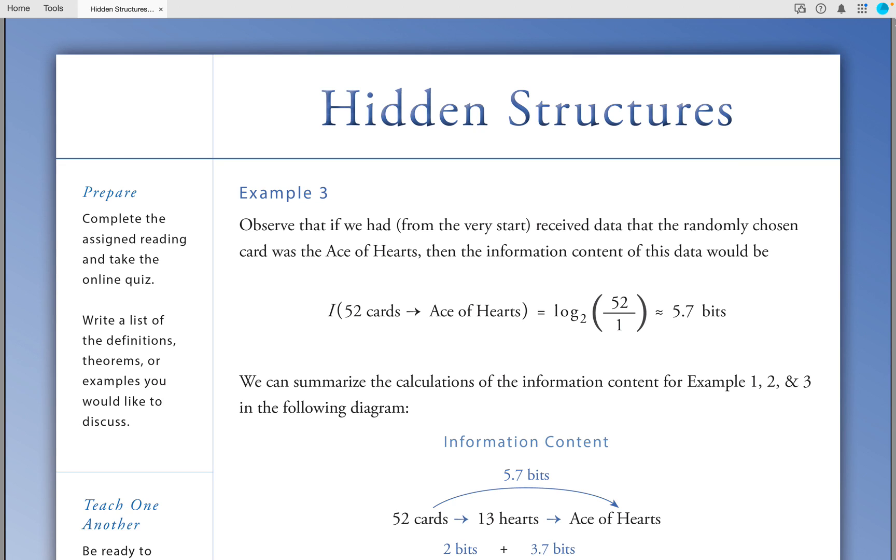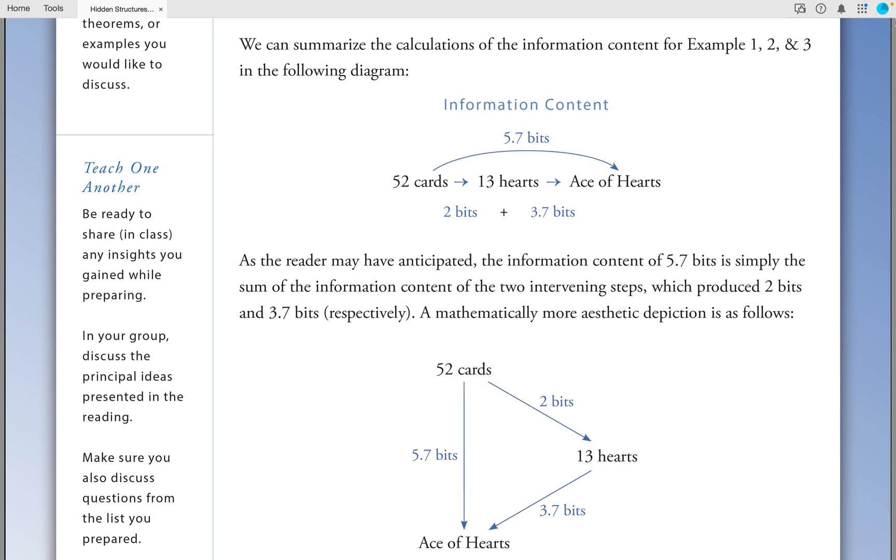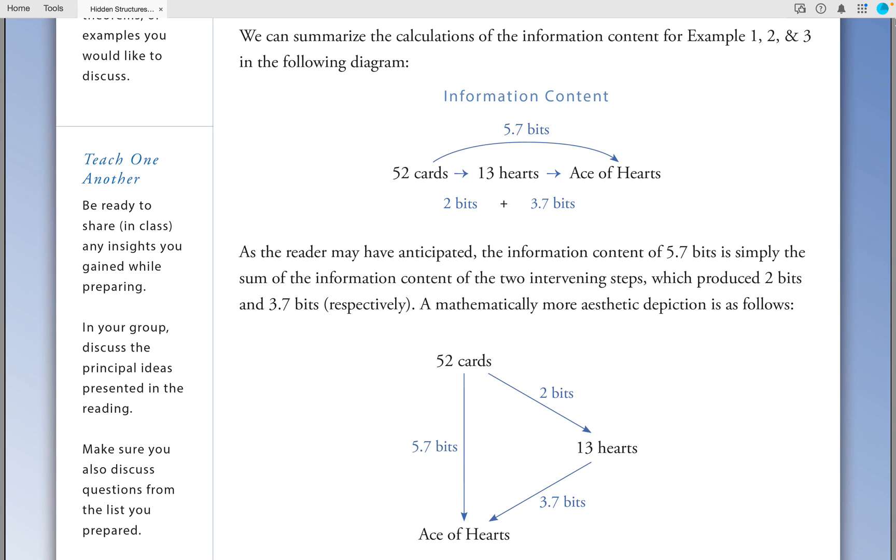We can summarize the calculations of the information content for examples 1, 2, and 3 in the following diagram. As the reader may have anticipated, the information content of 5.7 bits is simply the sum of the information content of the two intervening steps, which produce 2 bits and 3.7 bits, respectively. A mathematically more aesthetic depiction is as follows.